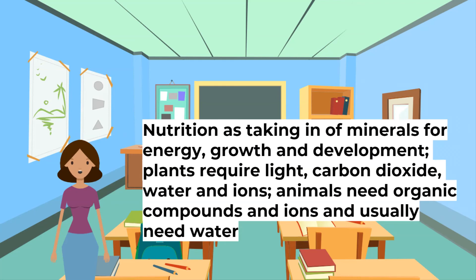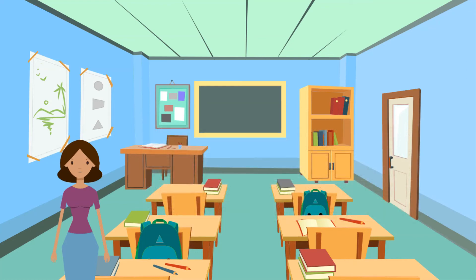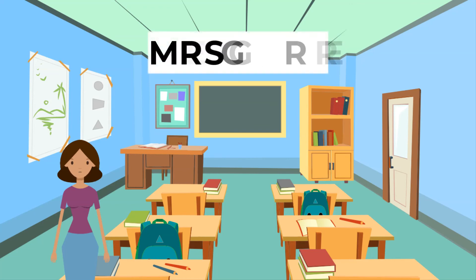Nutrition is the taking in of materials for energy, growth and development. Plants require light, carbon dioxide, water and ions. Animals need organic compounds and ions and usually need water. Learn these definitions — and remember, an easy way to recall all the characteristics is MRS GREN.